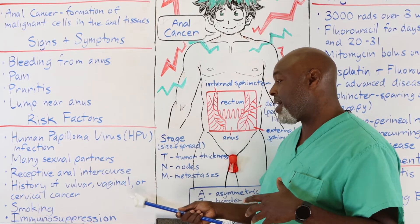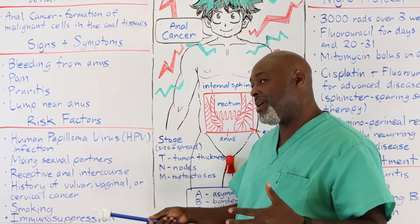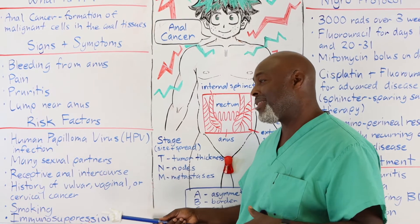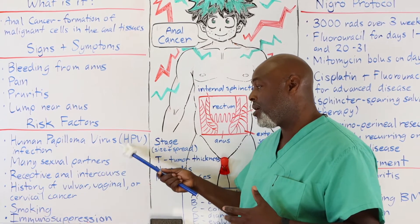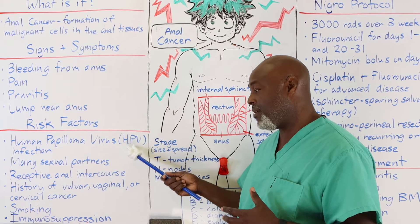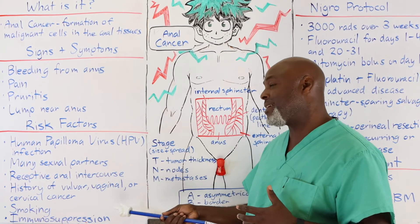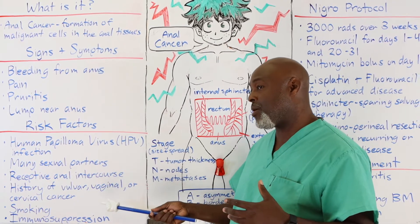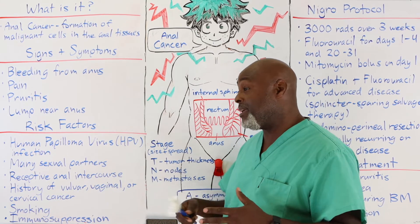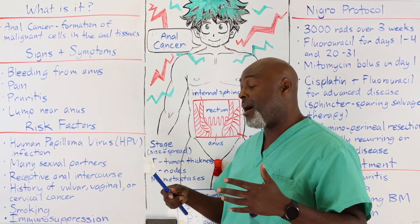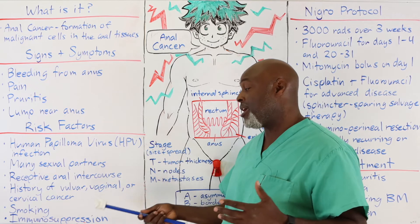History of vulvar, vaginal, and cervical cancer — same kind of thing, chronic irritation, and usually most of these are due to HPV. Smoking puts you at risk for this. Any type of immunosuppression — HIV, diabetes, transplant patients, anything that immunosuppresses you — can put you at risk for anal cancer.